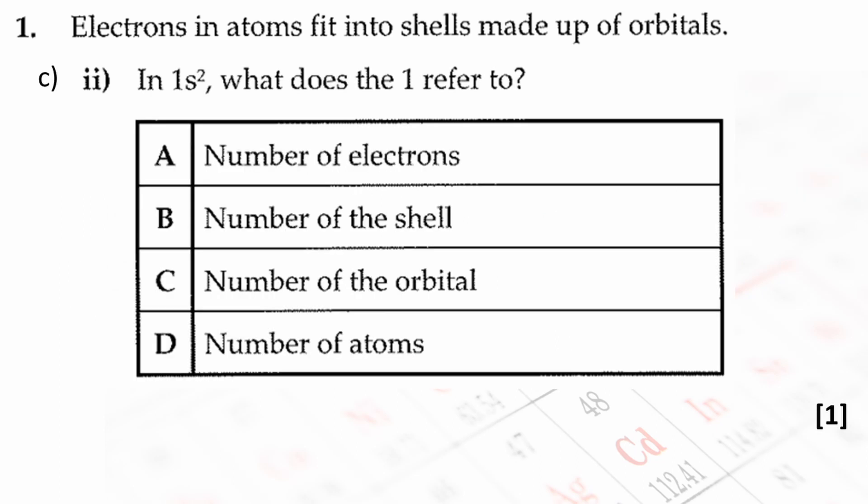Finally, in 1S2 what does the 1 refer to? So we mentioned this on the previous question. The 1 is the principal quantum number, it's the number of the shell, also it's the number of the energy level. The answer is shown here. The number of electrons in each subshell is shown with a superscript number, the number of the orbital and the number of the atoms. I'm not quite sure what that means and that's a good tip. If you really don't recognize any of the answers, never leave a multiple choice question blank and try to narrow it down to a choice of 1 out of 2 or 3 sensible options.